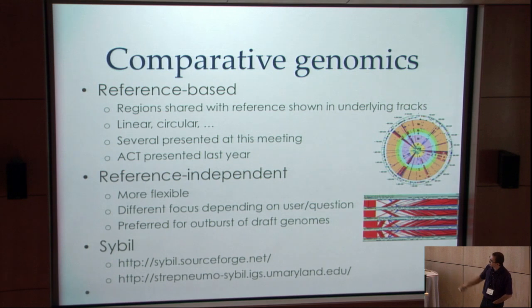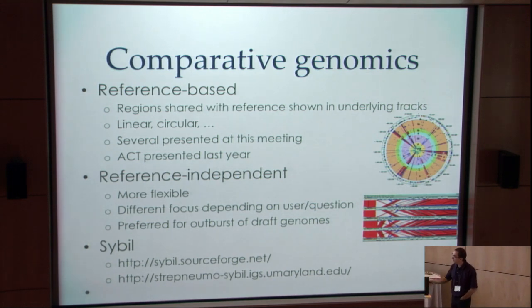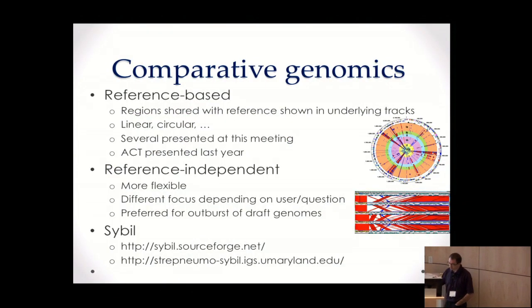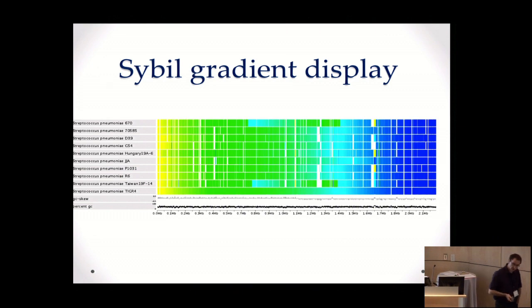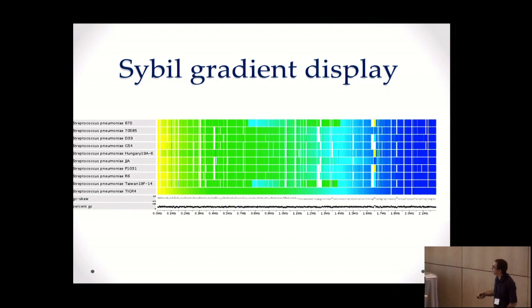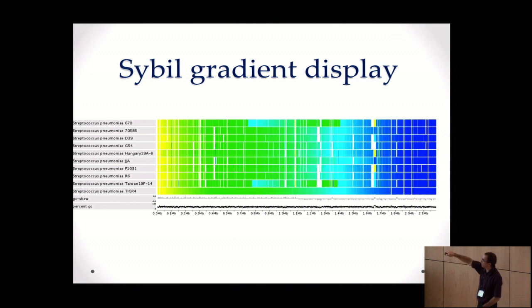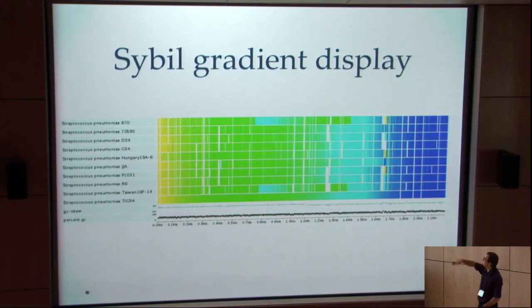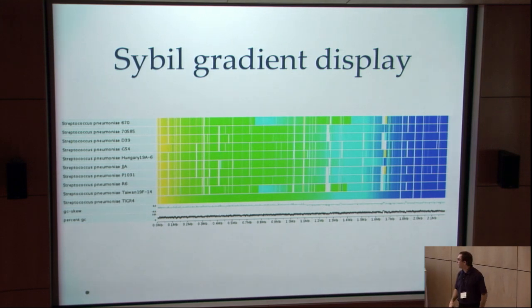Let me tell you about one of the projects at the Institute for Genome Sciences at the University of Maryland, Baltimore. This is Sybil — it's geared towards comparison of closely related strains of a species, like a bunch of streptococci, and is applicable to any type of organism.